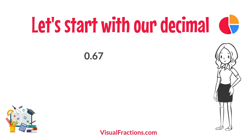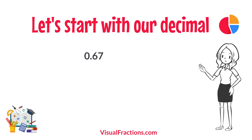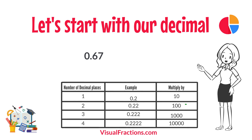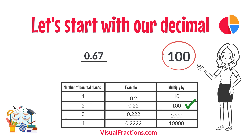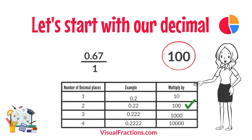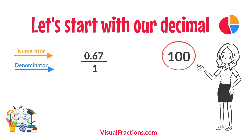Notice there are two digits to the right of the decimal. This places it in the hundredths position. To convert this decimal into a fraction, you initially put it over 1, essentially treating the decimal as the numerator in a fraction where the denominator is 1.